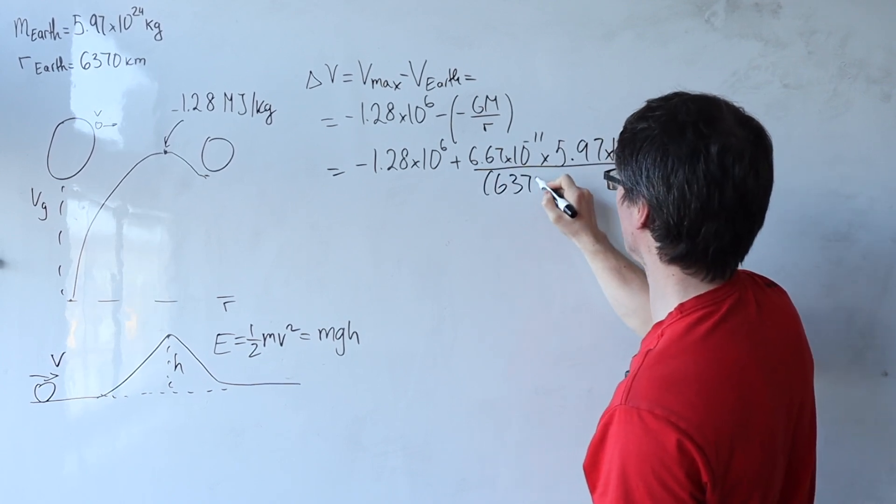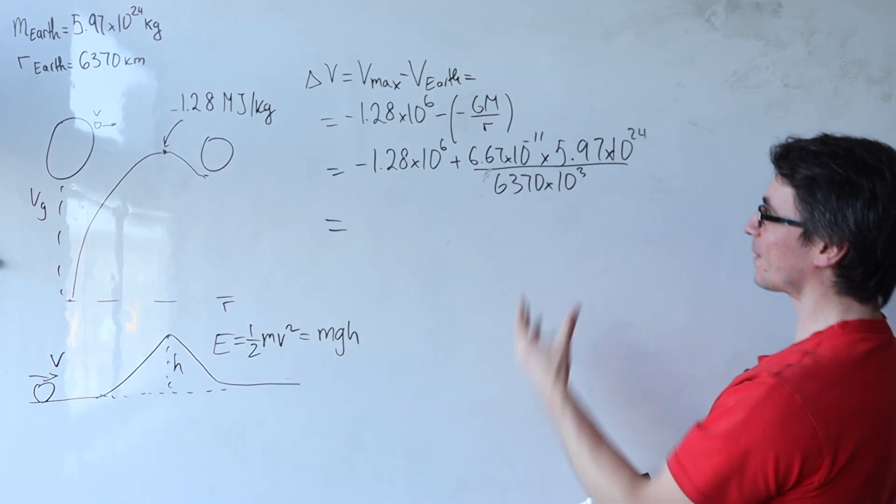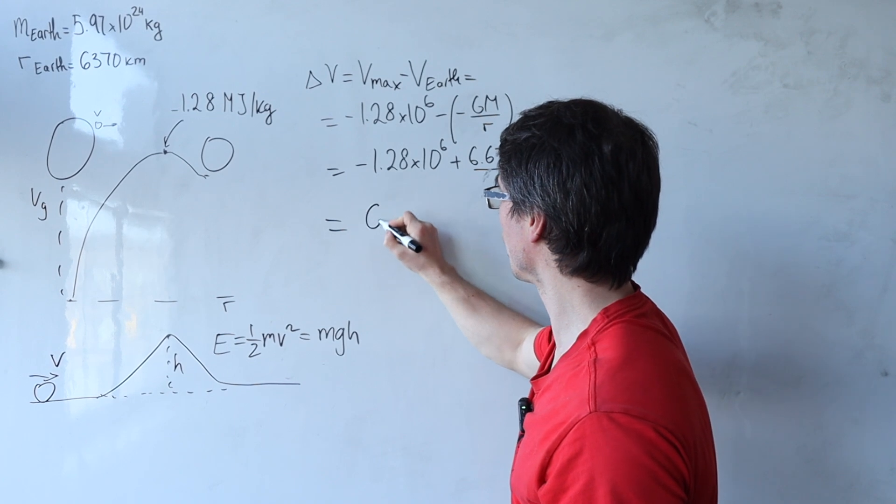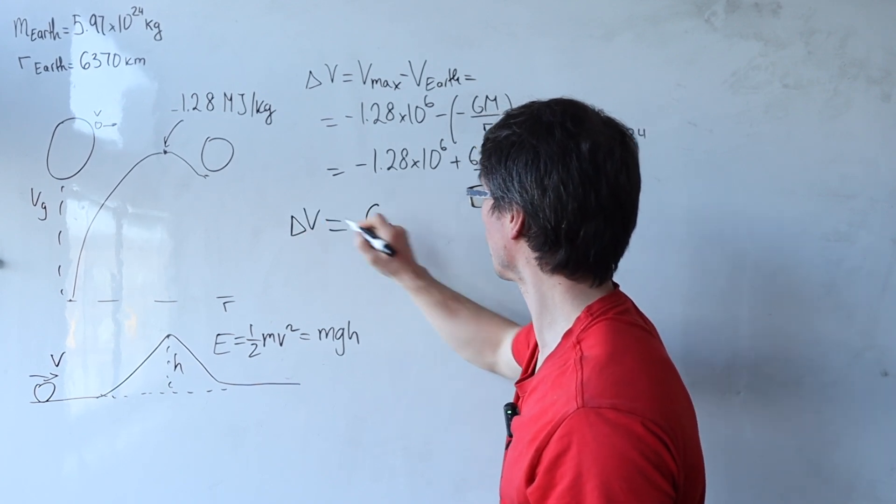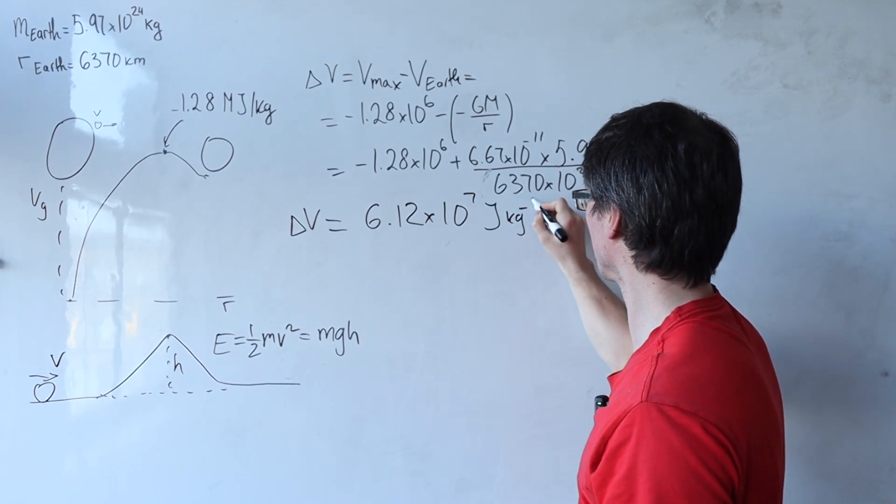Divide that by the radius of the Earth, which is 6,370 times 10 to the power of 3. I don't need a bracket here. Evaluating this expression, we are going to get a change of potential to be 6.12 times 10 to the power of 7 joules per kilogram.